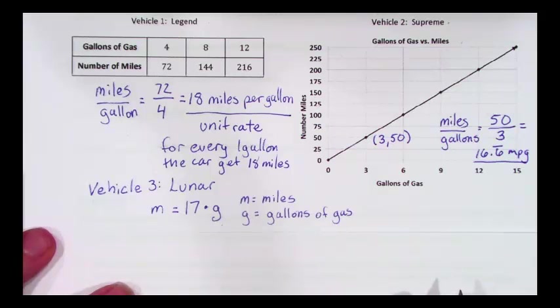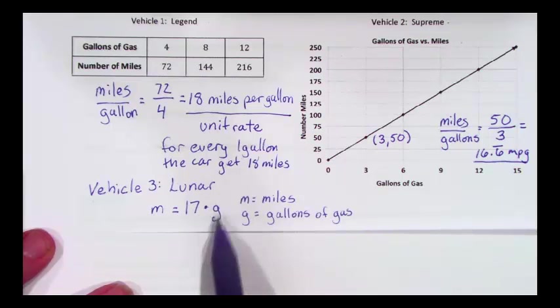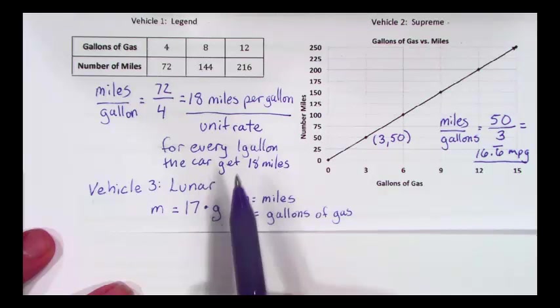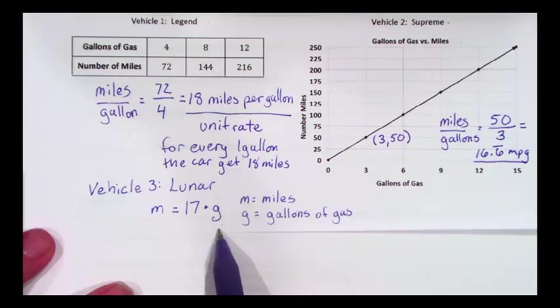The last one here is our equation, and I like equations because the unit rate is right out there in front of us. This equation says that the number of miles I can go equals seventeen times the number of gallons I have. Since my unit rate is for every one gallon, then I can just put a one in for the g, multiply by seventeen.